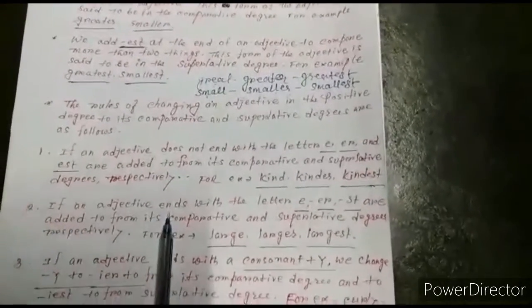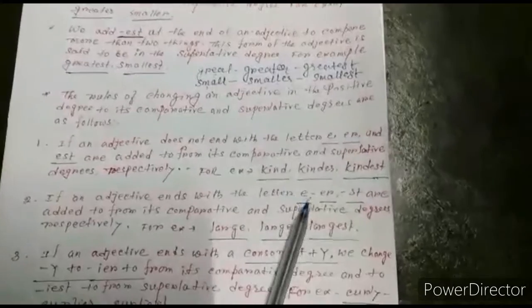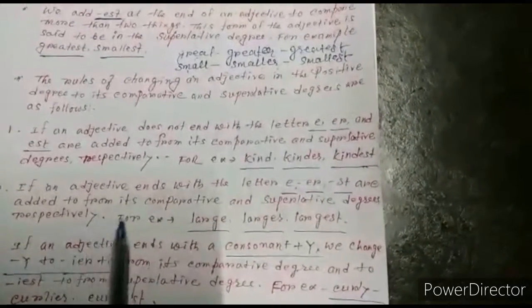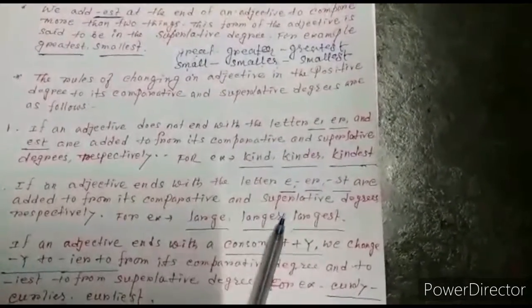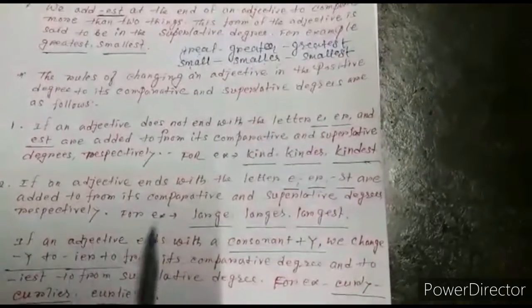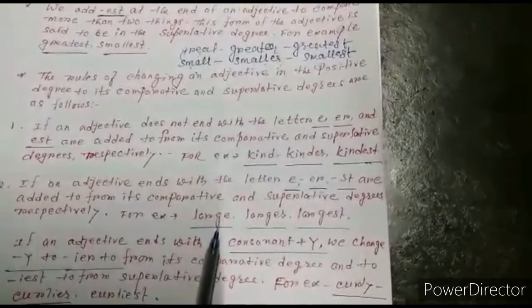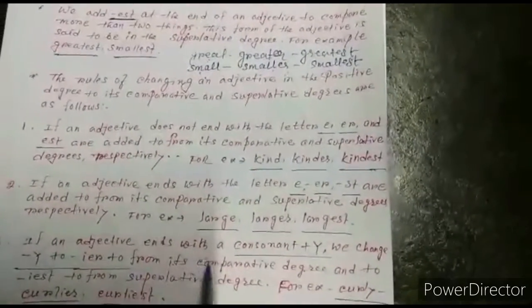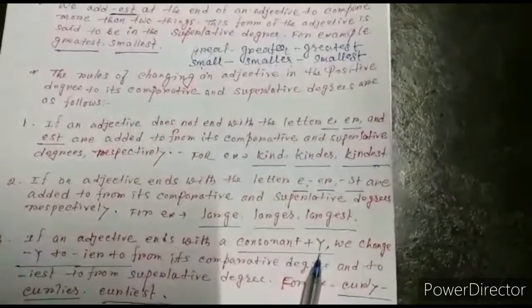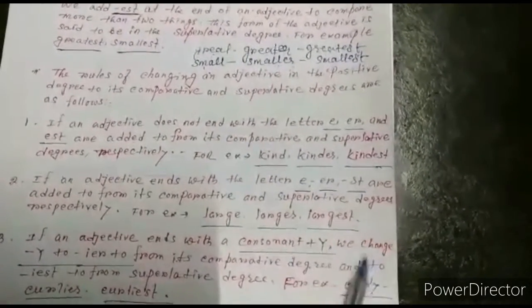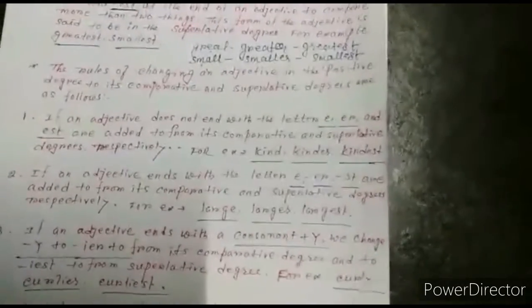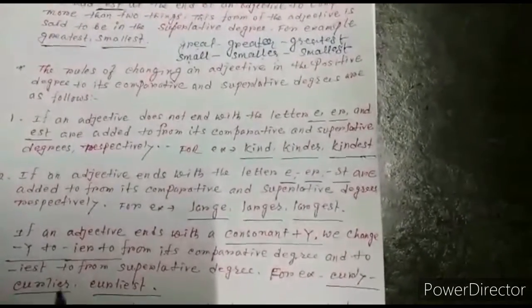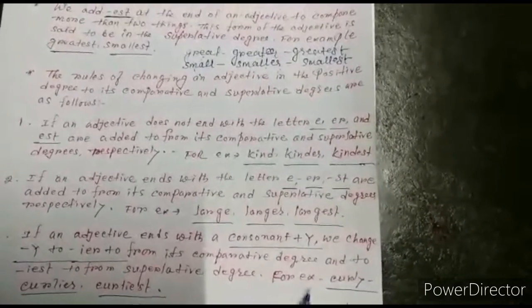Number 2: If an adjective ends with the letter E, ER and EST are added for comparative and superlative degrees respectively. For example: large → larger → largest. Number 3: If an adjective ends with a consonant plus Y, we change Y to IER to form the comparative degree, and to IEST to form the superlative degree.